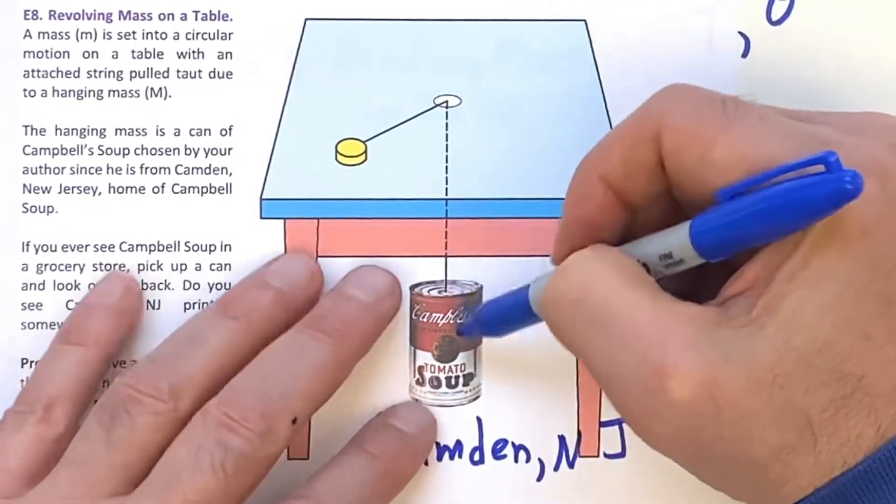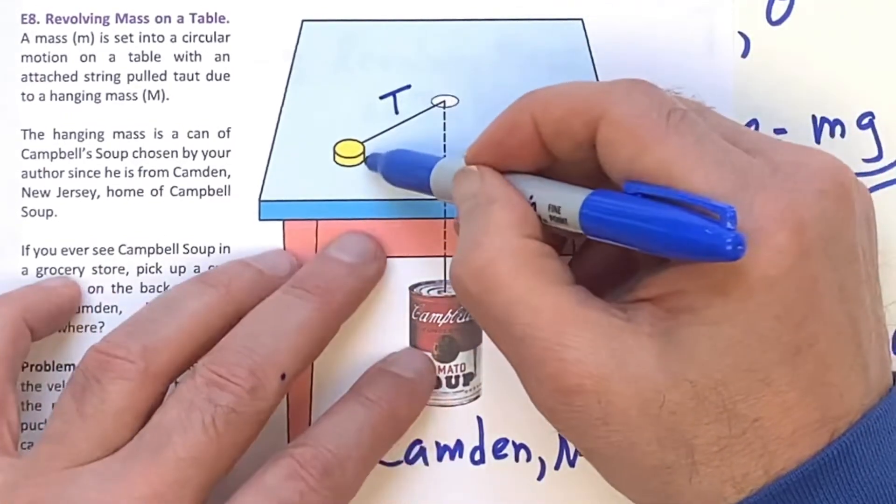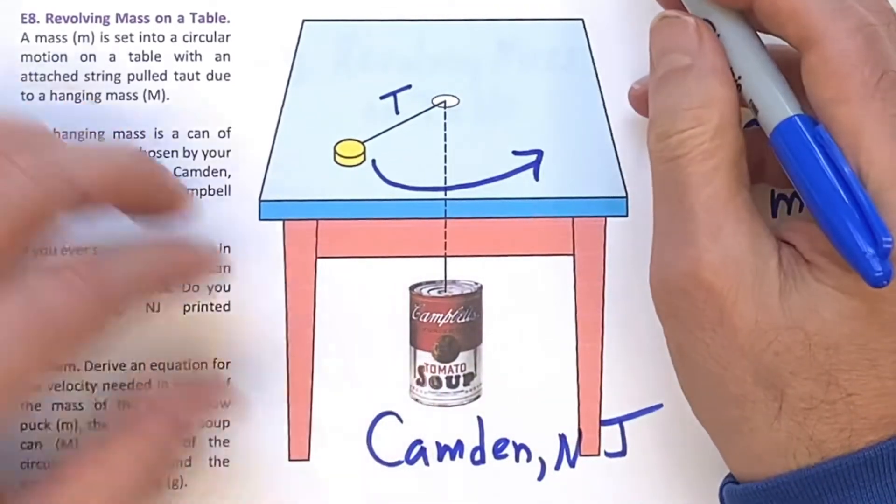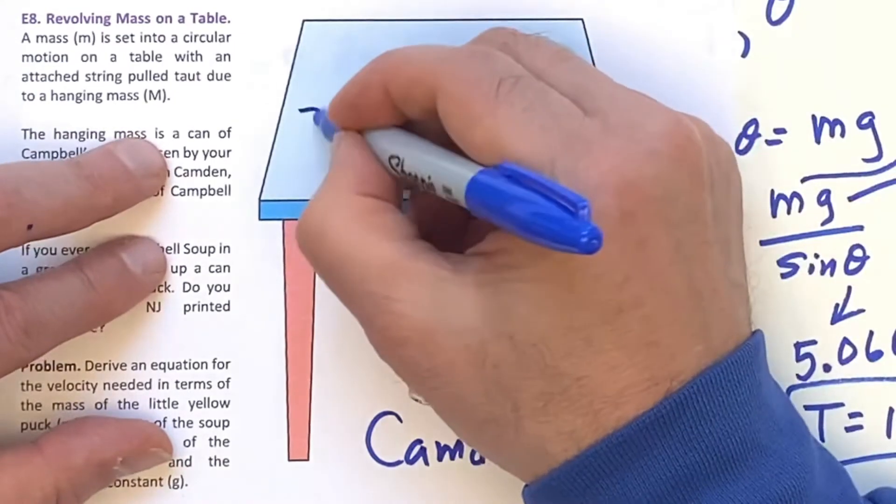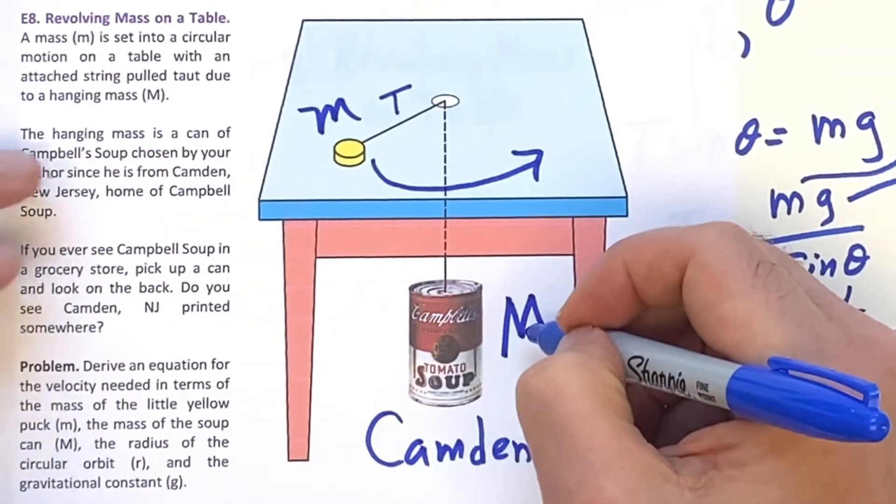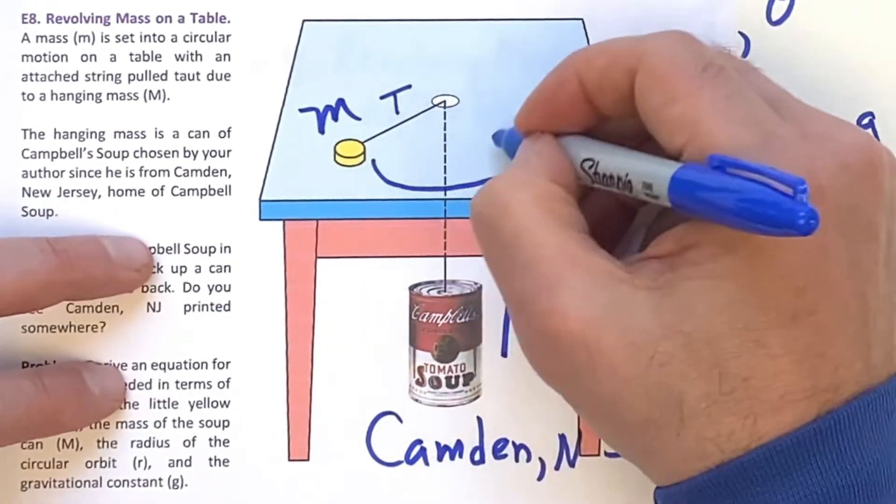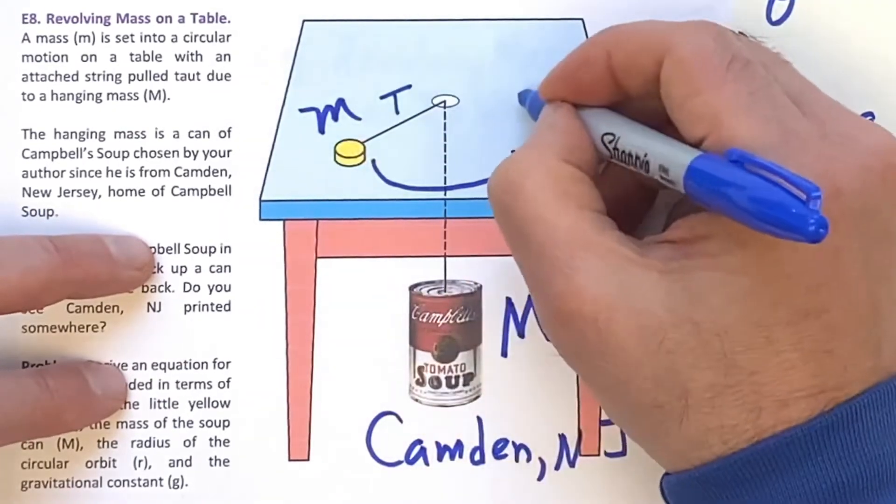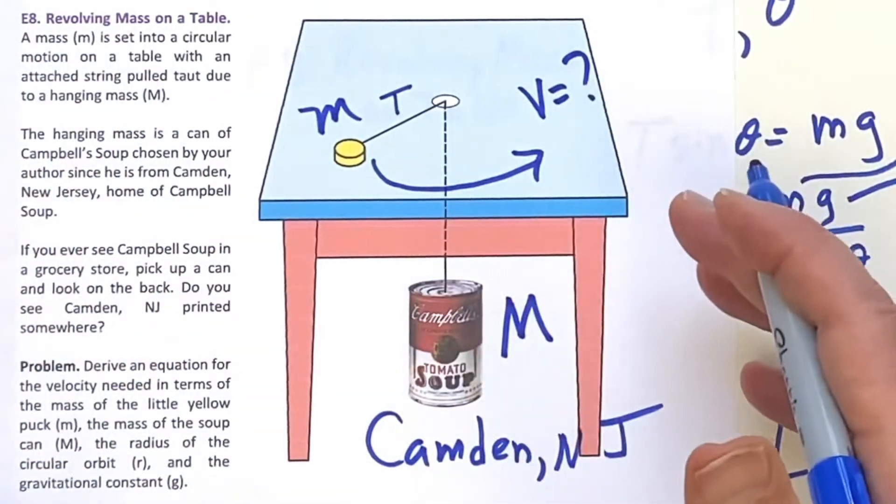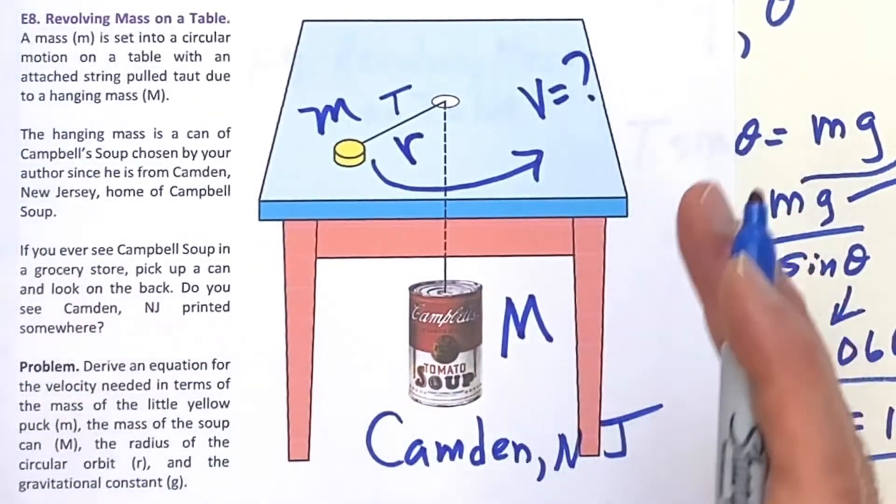So here, that's causing the tension, and this is going in a circle. So we have a mass. This one's called little m. This is the big M. And they want you to solve the problem to find what the velocity is. What is v in terms of the other parameters? And this is radius r, so that this will work.